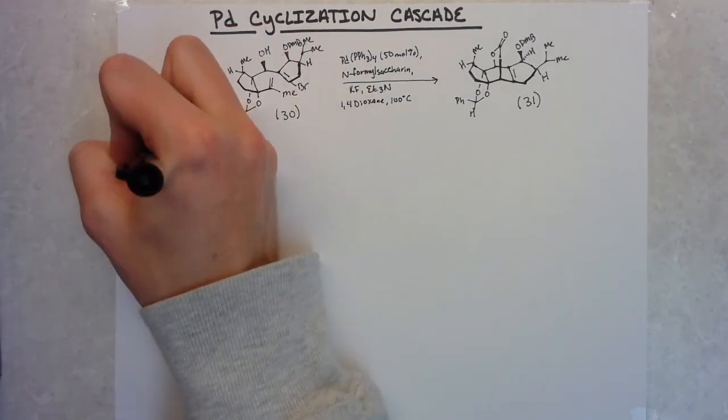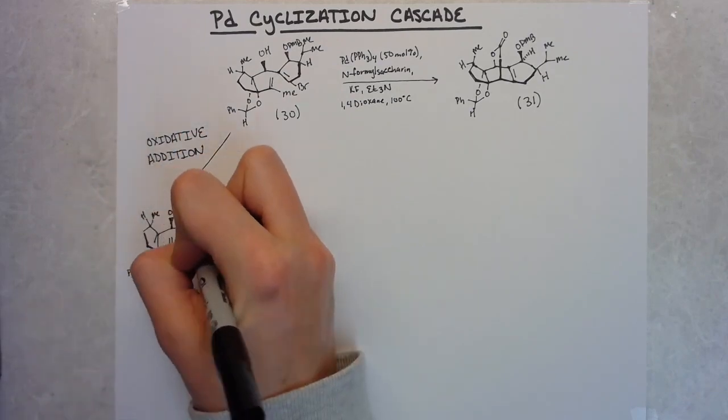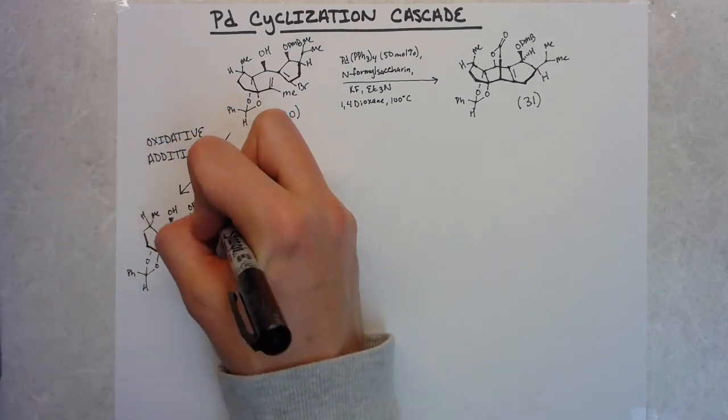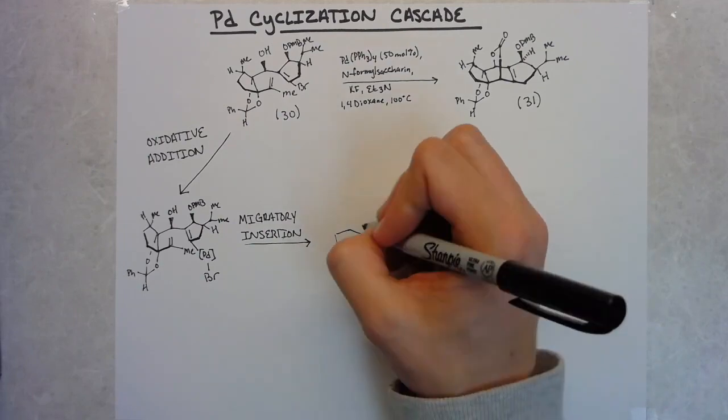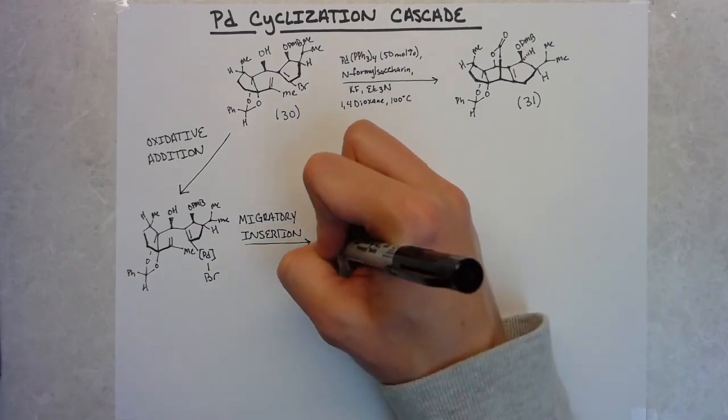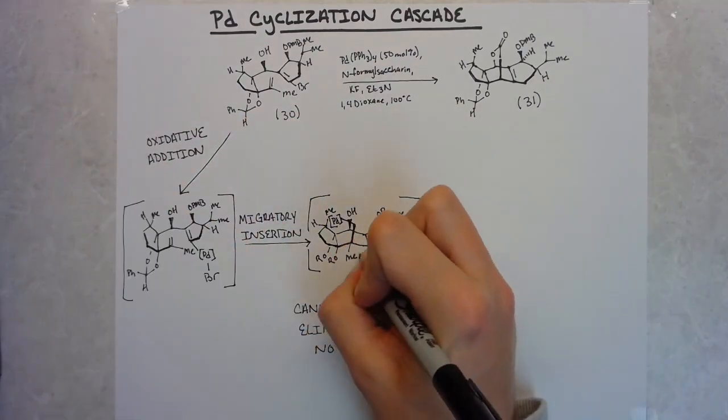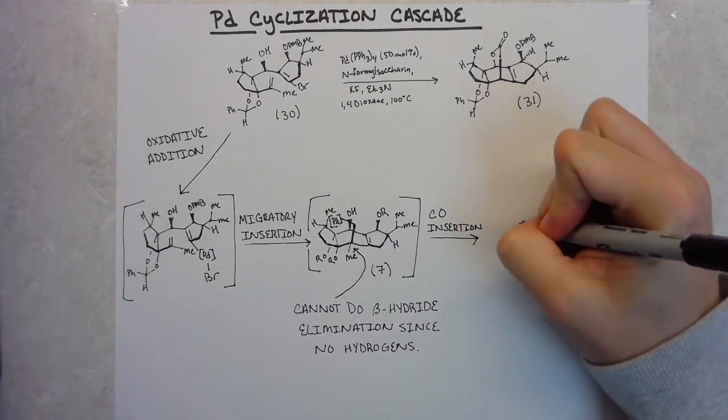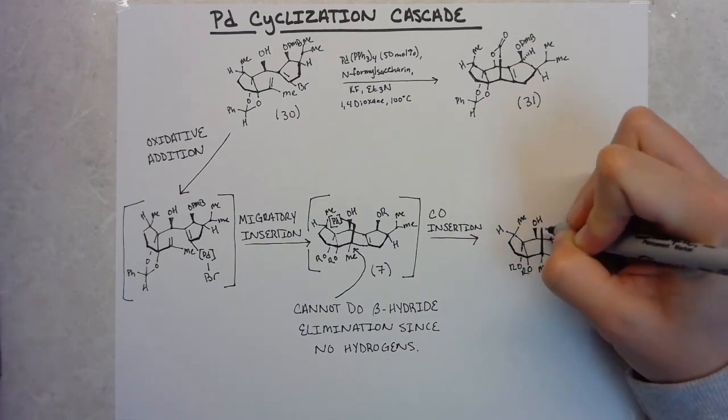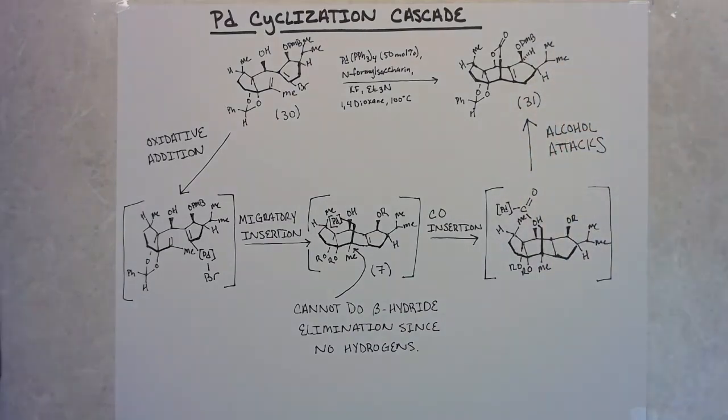Looking specifically at some of the fundamental steps that they're hoping will operate under this cascade: In the presence of palladium, ideally that vinyl bromide will undergo oxidative addition. That palladium intermediate will then migratory insert into the 1,1 alkene. At this point, a sigma alkyl palladium species is generated. In an atmosphere of carbon monoxide, ideally the CO will insert into that palladium carbon bond. That intermediate will be trapped by the alcohol to form the seven-membered lactone.